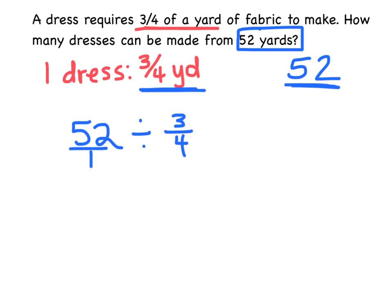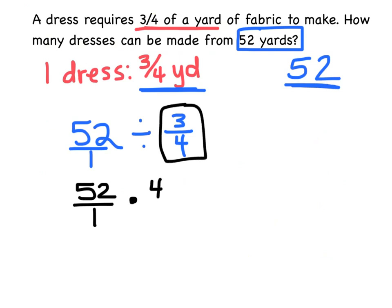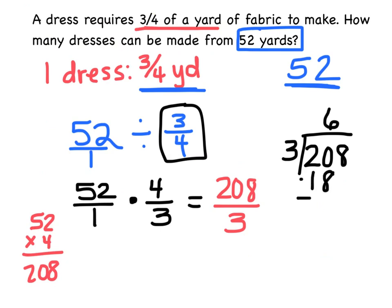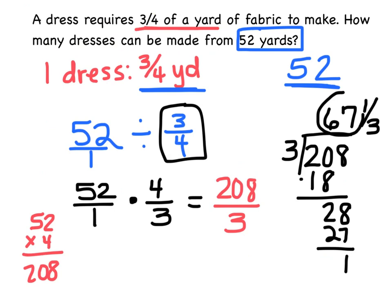So if I divide by three-fourths, that'll give me how many dresses will go into 52 yards. When you divide, you can put a one underneath the 52. This first number is going to stay, and then you're going to multiply by the reciprocal of three-fourths, which is four-thirds. Now I'm just going to multiply straight across: 52 times 4 is 208, over 1 times 3, which is 3, giving me 208-thirds. Because this wants to know how many dresses I can make, I need to divide that out. Three goes into 208 sixty-seven times with a remainder of one-third. So they can make 67 full dresses.